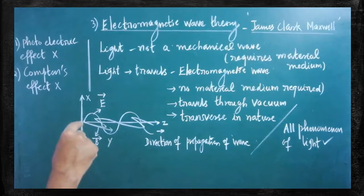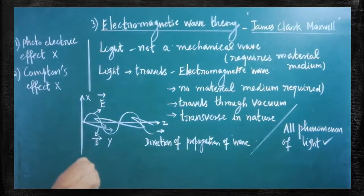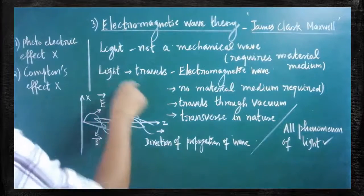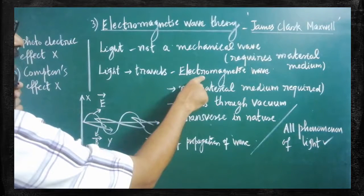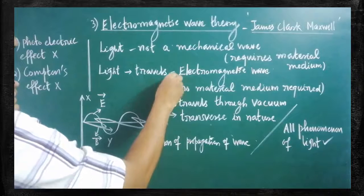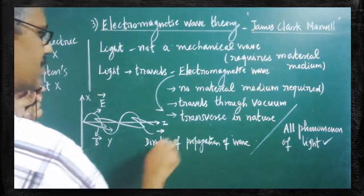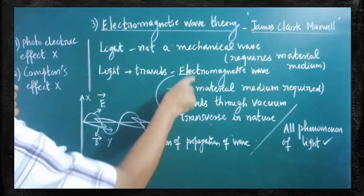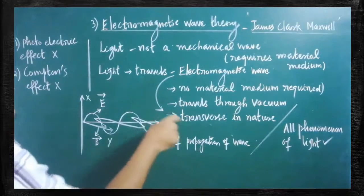Without any material medium, light is able to travel even through vacuum. As per Huygens' theory, light travels in the form of a longitudinal wave, but that idea was later disproved. Scientists proved that light travels in the form of transverse waves. Combining both: light travels in the form of electromagnetic waves, and that electromagnetic wave is transverse in nature. These two combined properties are very important.